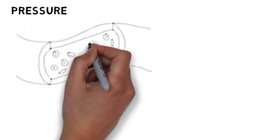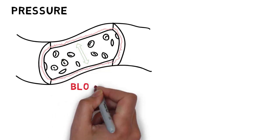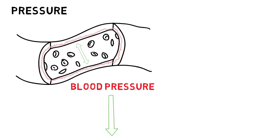Pressure. Blood pressure is simply the pressure of the blood against the walls of the vessels. Blood pressure decreases as it travels through the body circuit.